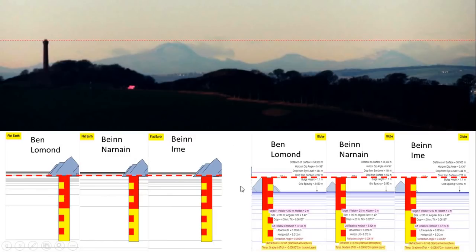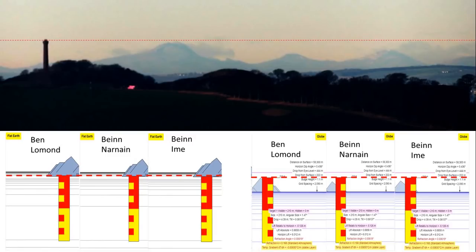The other criticism leveled at it is that it takes no account of the atmosphere between the observer and the object. But it does. Walter has factored in atmospheric refraction into the calculations, and you can apply varying amounts of atmospheric refraction. I have opted for a fixed standard atmospheric refraction for these particular modellings. On a different day the amount of refraction might be somewhat different, and the mountains might appear either slightly lower or slightly higher than they do in this observation.